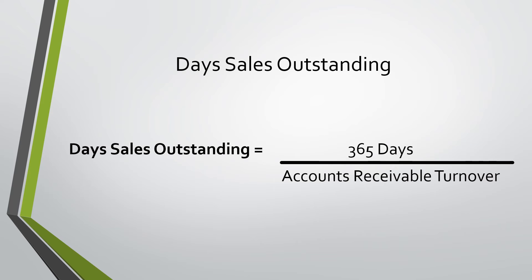Days sales outstanding. In days sales outstanding, we use our accounts receivable turnover and basically just turn it into days of the year. We do 365 days divided by the accounts receivable turnover, and this puts our number into days.